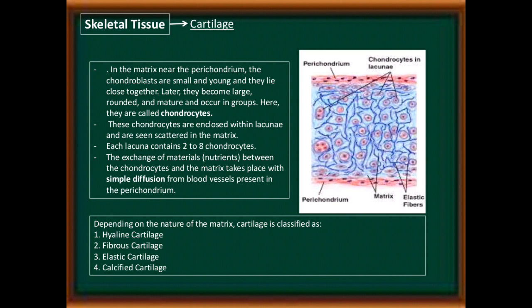Depending on the nature of the matrix, cartilage is classified into four types: first, hyaline cartilage; second, fibrous cartilage; third, elastic cartilage; and fourth, calcified cartilage.